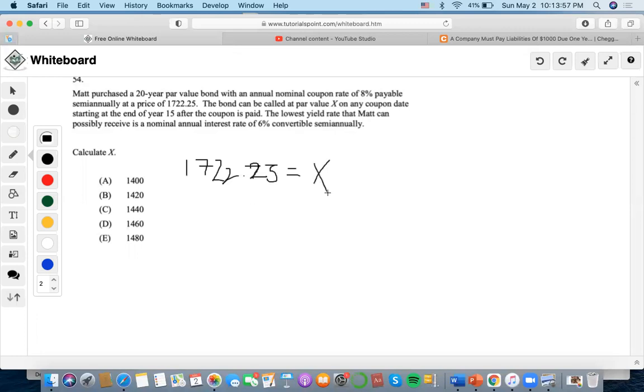So we have to multiply this by 0.04 to find the coupon value at present value. 20 years times 2 is 40 semiannual periods. The lowest yield rate is 6% semiannual, so it's 3%.